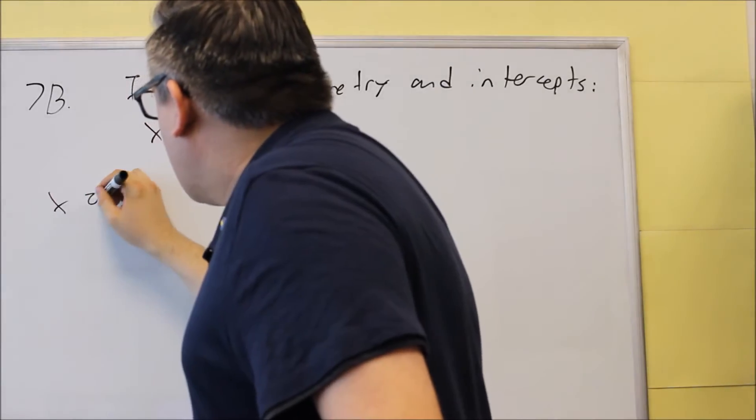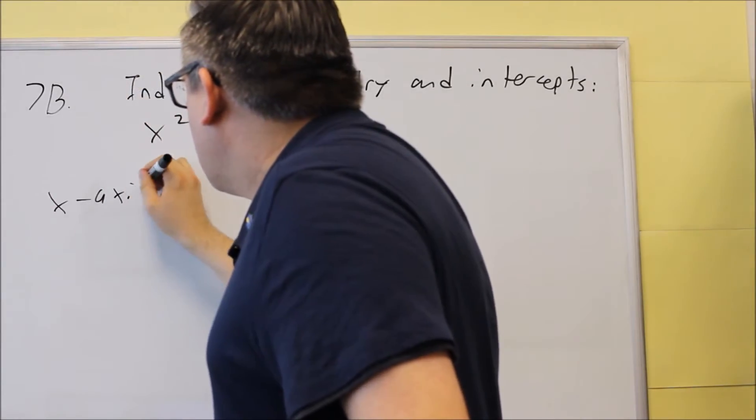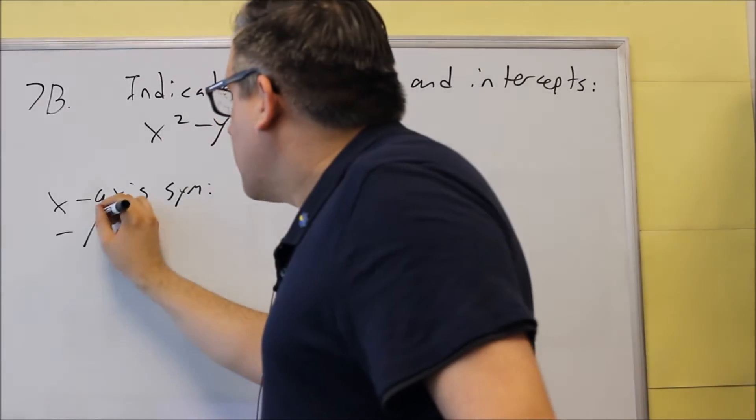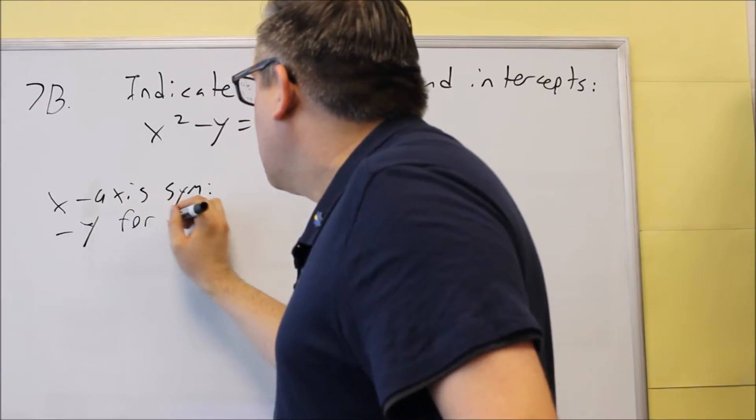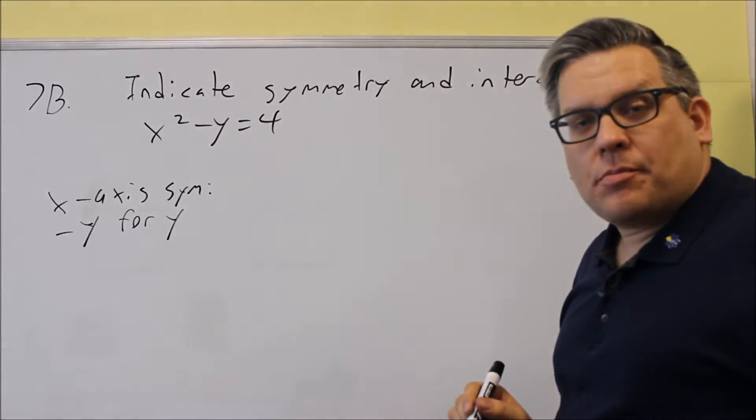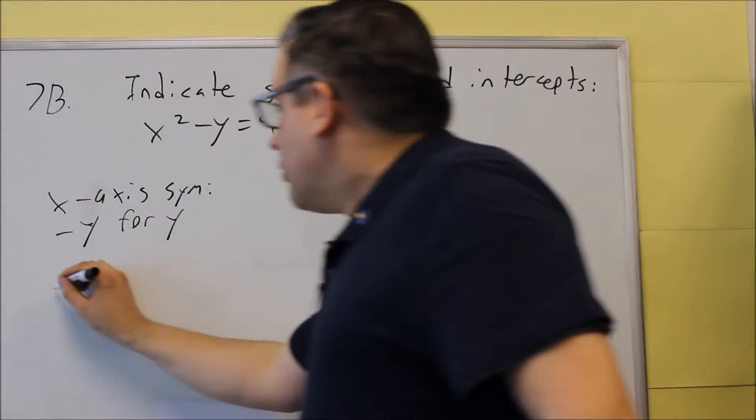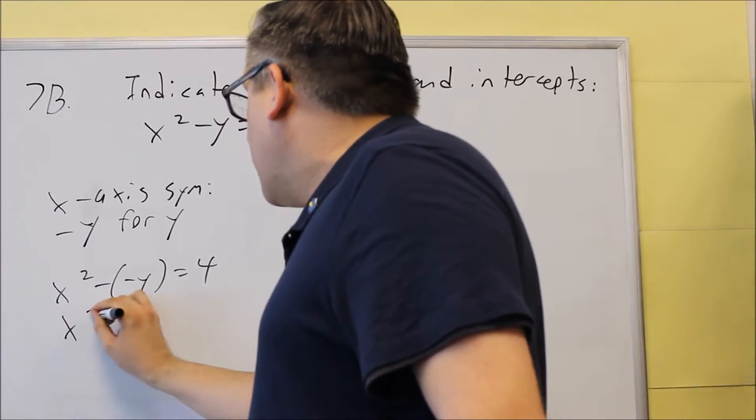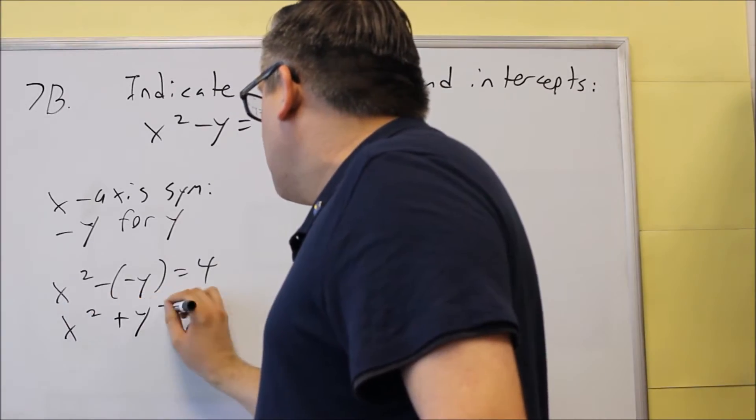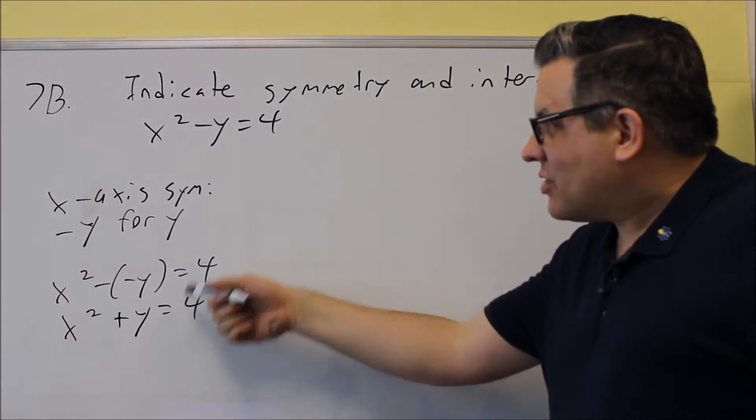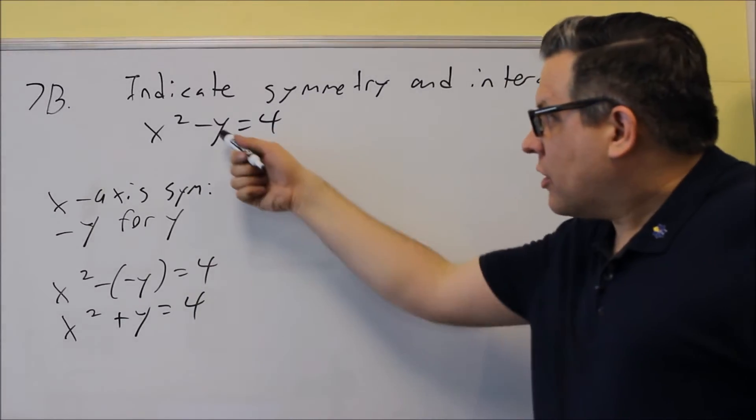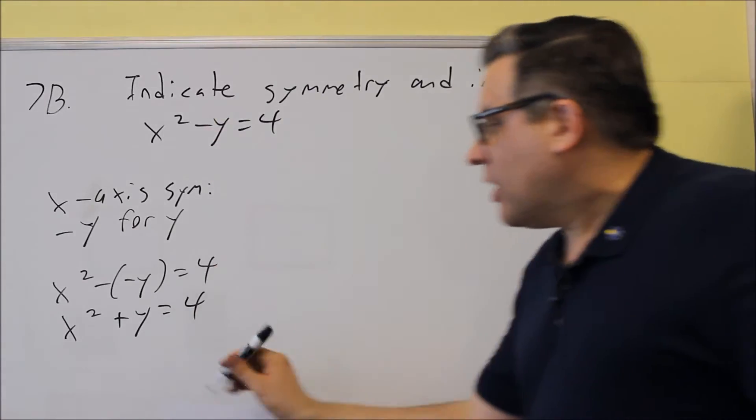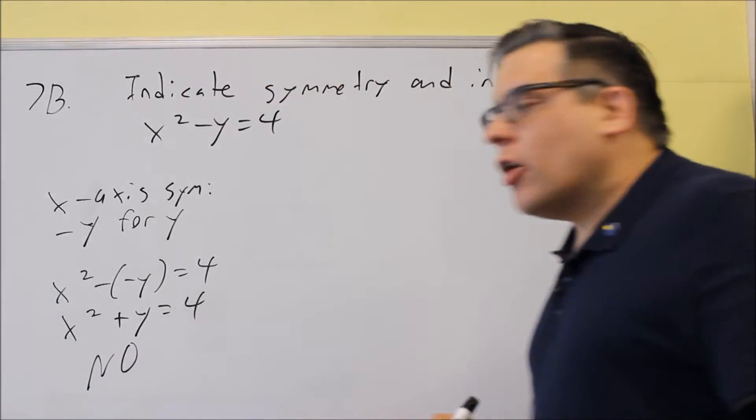So first we're going to look at x-axis symmetry. For x-axis symmetry, the notes say we're going to put in a negative y in place of the y. So we're going to do x² minus negative y, and then we're going to simplify it. And we end up with that, and that's not the same as the original one because it's minus and we got a plus. Nothing we can do to make this one go back to the original one. So this is a no, no for x-axis symmetry.